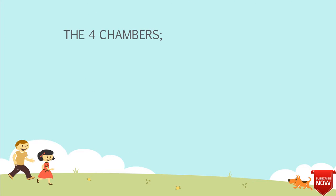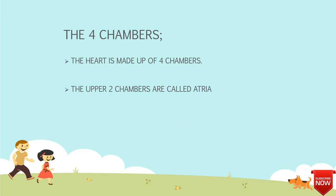The four chambers of the heart. The heart is made up of four chambers and it is made up of cardiac muscle — a very, very special muscle that never gets tired. The upper two chambers are called atria, and the lower two chambers are called ventricles.